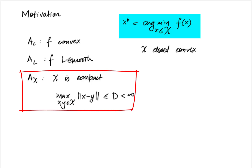We have seen the projected gradient descent method for this problem, which takes the form x_{t+1} = P_X(x_t - eta * gradient f(x_t)). But we have only considered settings where this projection operation was easy. The ease of calculation was of course not included in the oracle complexity calculations.